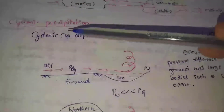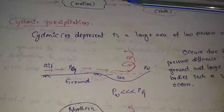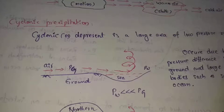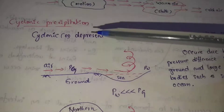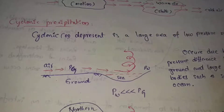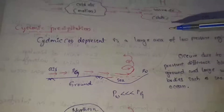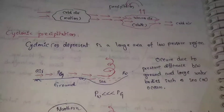Next topic: Cyclonic Precipitation. Cyclonic Precipitation is a large area of low pressure region.